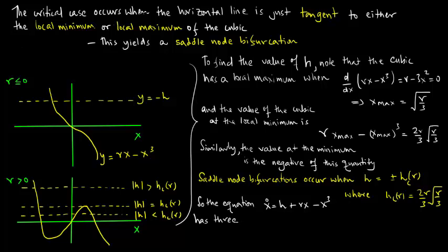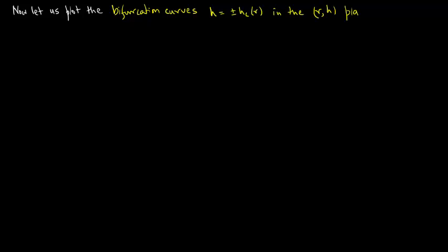So the equation x dot equals h plus rx minus x cubed has three fixed points for the absolute value of h less than h_critical and has one fixed point for the absolute value of h greater than h_critical. Now let us plot the bifurcation curves h equals plus or minus h_critical in the RH plane.